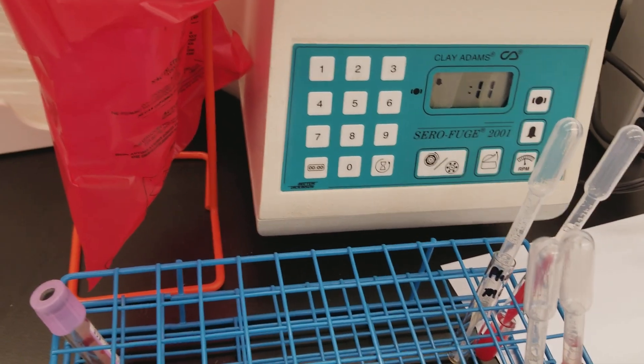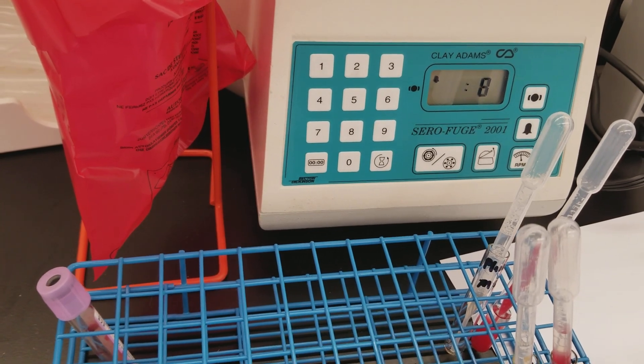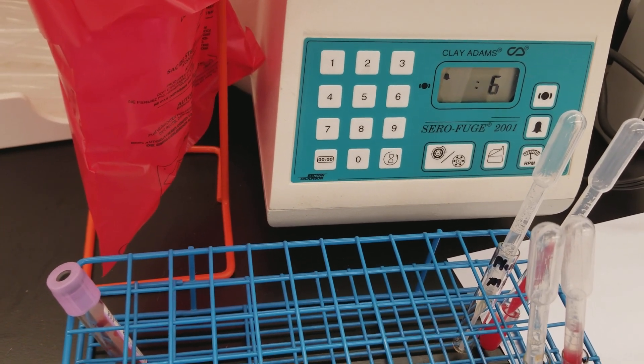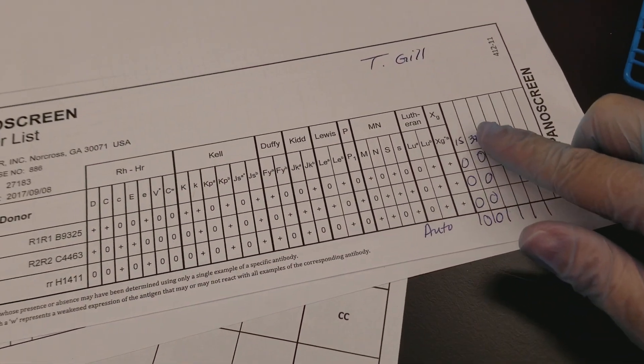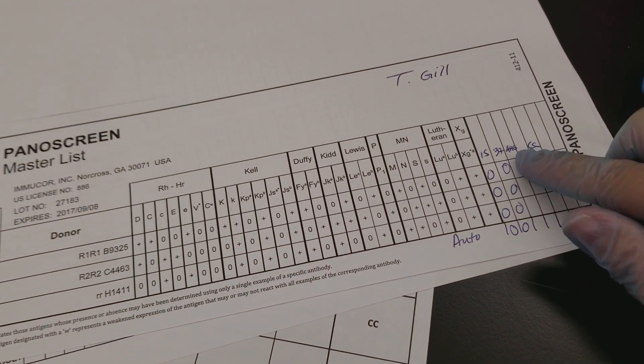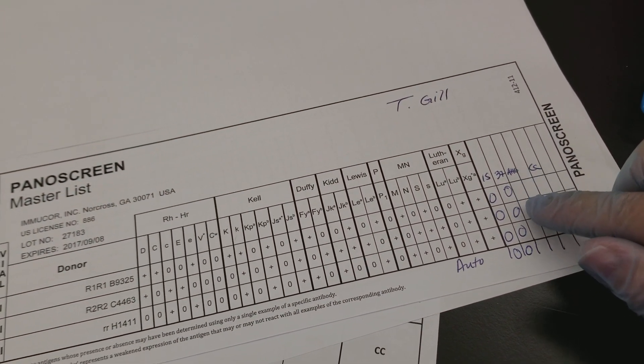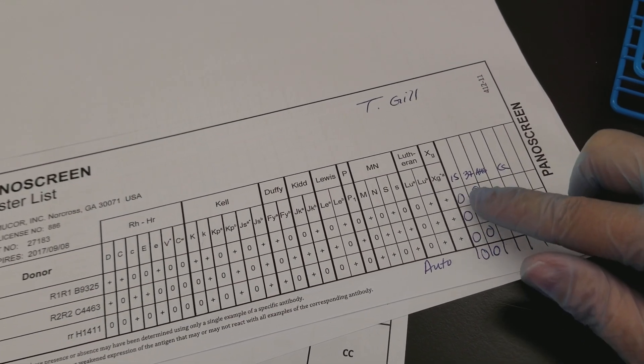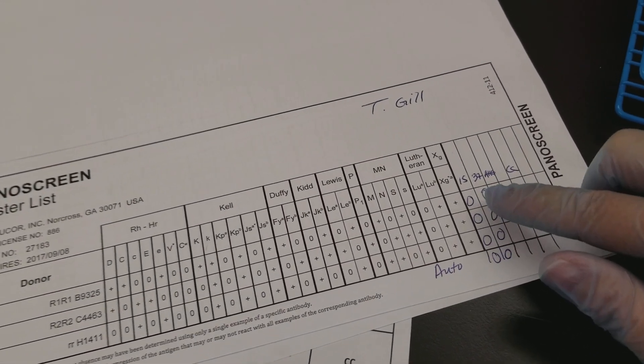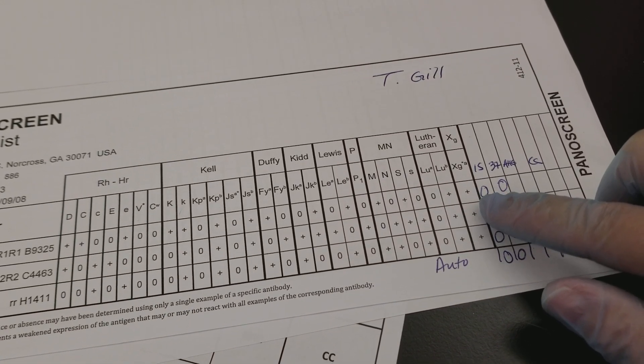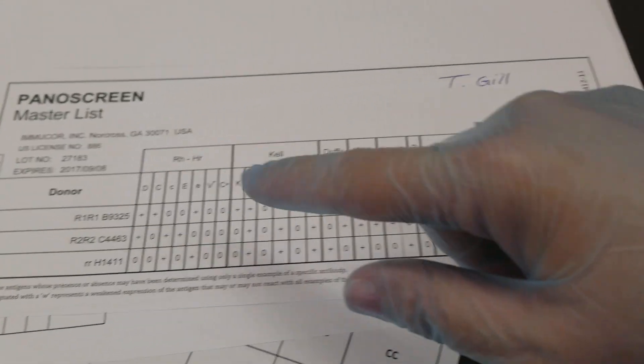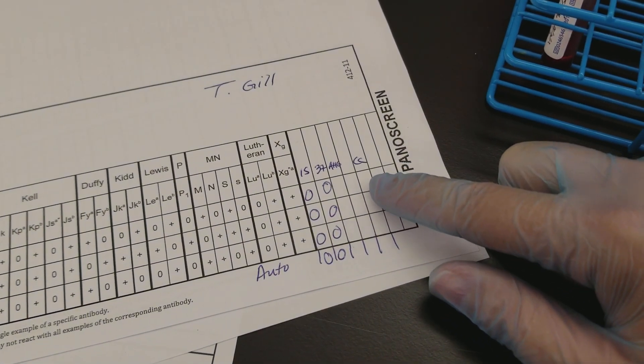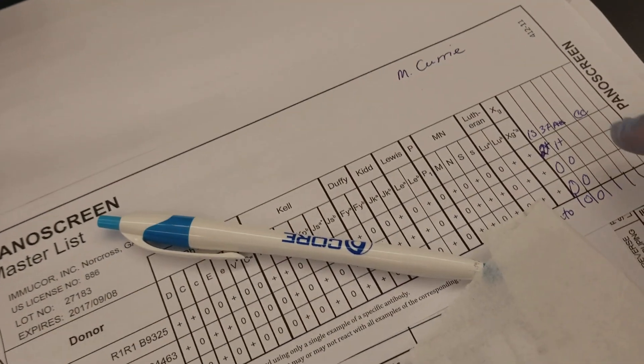So we added one drop of AHG reagent - I use the poly-specific. We are going to spin them and then we're going to look for agglutination, and that would be the final phase of this. And if all of the reactions in all the phases of a particular donor cell were negative, then we would add the check cells. If not, like cell one of this patient, we would not add the check cells.